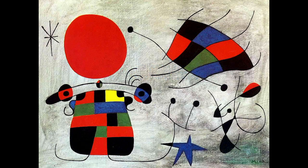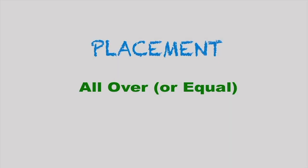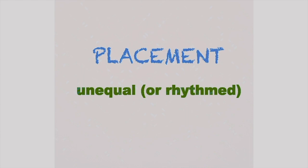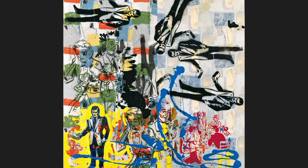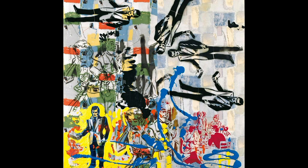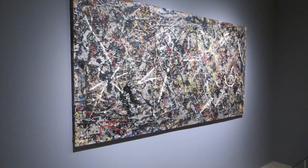Placement composition has to do with just placing things in the painting — placing shapes in the painting and not connecting to the edge. There are essentially two ways of attending to placement composition: all-over or equally spaced placement, or varied placement — unequal or rhythmed placement of shapes. This painting has rhythmed or varied placement, while this painting by Jackson Pollock has equal and all-over placement.